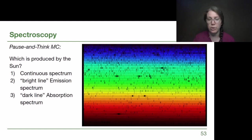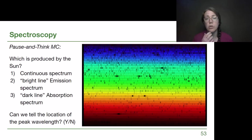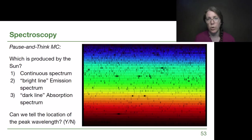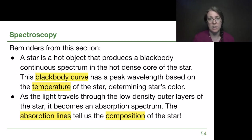A follow-up question: can we tell the location of the peak wavelength from this image? That's a yes-or-no question. What we realize is that we don't see that peak wavelength. We know from a previous slide that the sun peaks in the yellowish-green colors, but that is not represented when we look at the data this way. That is why we have black body curves and separately the spectral line analysis.